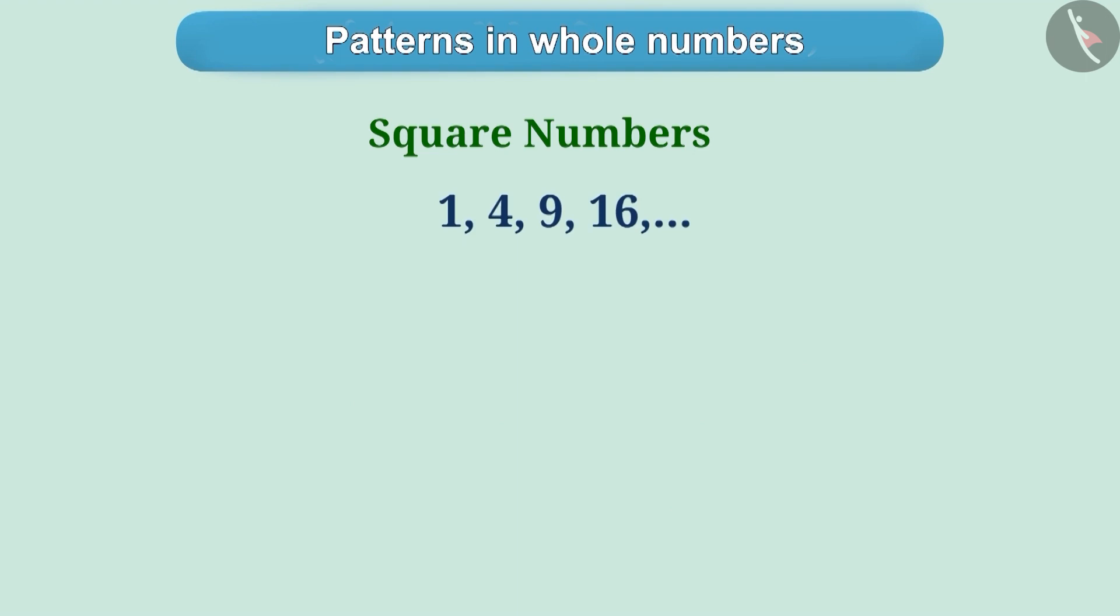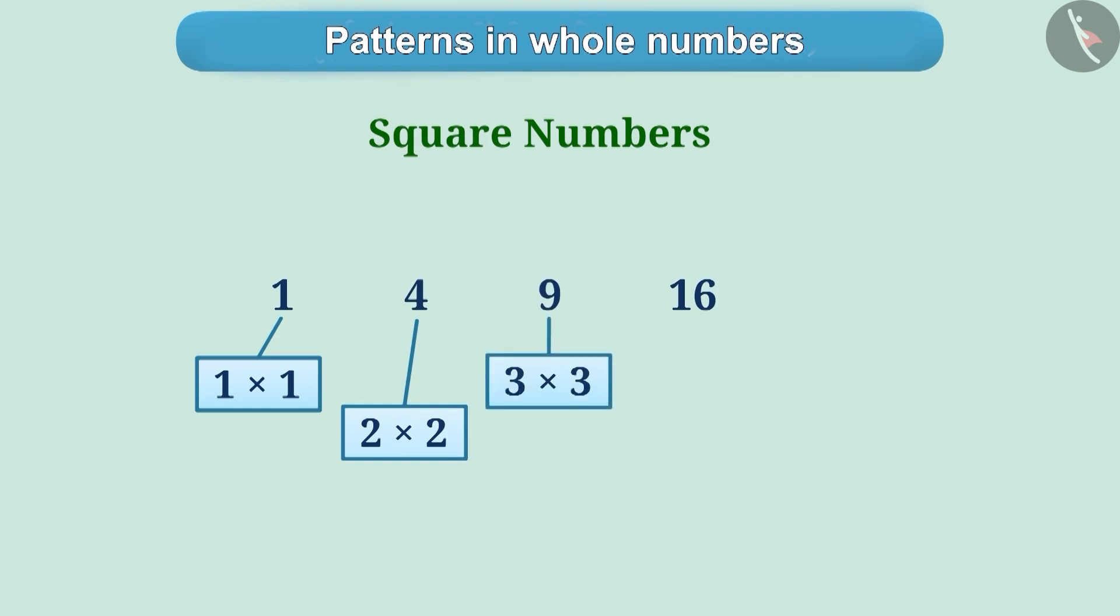Can you find any relation among these numbers? Think about it. Here, 1 multiplied by 1 is 1, 2 multiplied by 2 is 4, 3 multiplied by 3 is 9, and 4 multiplied by 4 is 16.